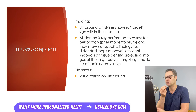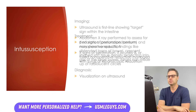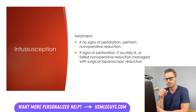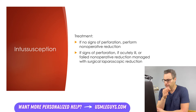For treatment of intussusception, if patients don't have signs of perforation and are not acutely ill, they can undergo non-operative reduction as the main treatment. This is performed with either hydrostatic or pneumatic pressure introduced via an enema, typically guided by ultrasound to confirm reduction has occurred. If there are signs of perforation, if they're acutely ill, or if they've failed non-operative reduction, management is with surgical laparoscopic reduction. If perforation is also present, we must repair that bowel as well.